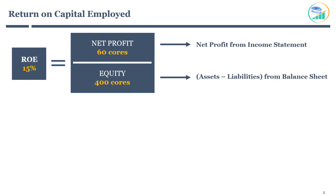In this case, return on equity will be 15%. This means the company is generating 15% return on equity invested. However, a business utilizes both equity capital and debt to generate profit. Return on equity considers only equity capital to measure returns to shareholders, and these returns can be artificially inflated by increasing the debt.